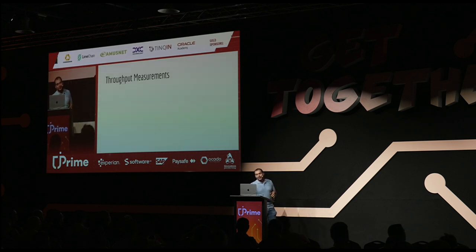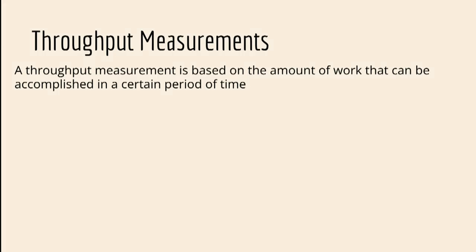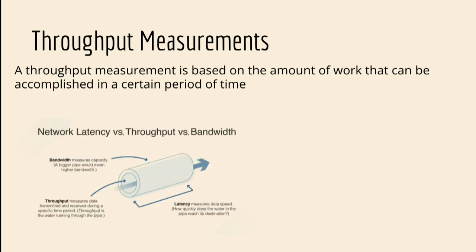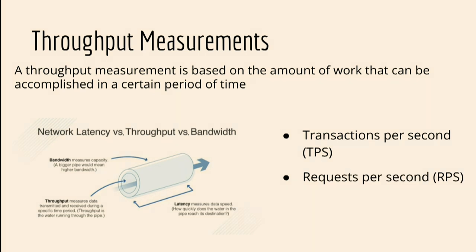The throughput measures the amount of work that can be accomplished in a certain period of time — one second, one minute, really depends on your application. It's basically a pipe and how much data can go through that pipe in some particular time. How we measure it: transactions per second, requests per second, or operations per second. If you want to be as generic as possible, use operations per second.